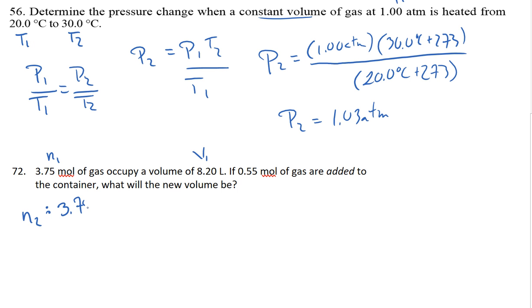N2, in this case, would be my initial number of moles plus the moles that I add, which is going to work out to 4.30 moles. Looking at N1, N2, and V1, I know this is going to be an Avogadro's law problem. Avogadro's law states that the number of moles of a gas and the volume of that gas are directly proportional. So if I'm increasing the number of moles, I would expect an increase in the volume of the gas.